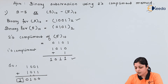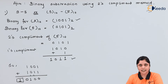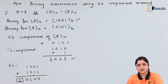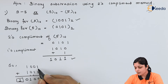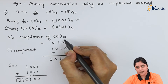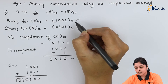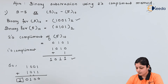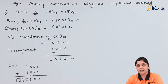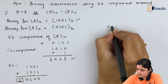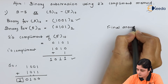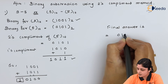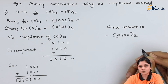Now, while performing the addition, if a carry comes out, you have to neglect the carry. When adding the 2's complement of 5 and the binary for 9, a carry is produced. So while writing the answer, you neglect the carry. The final answer is 0100 base 2.